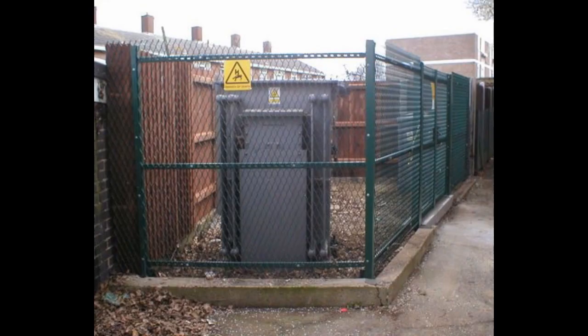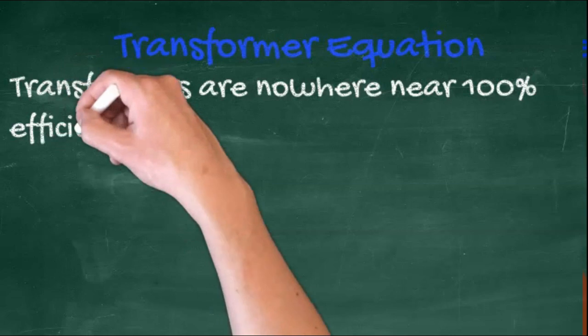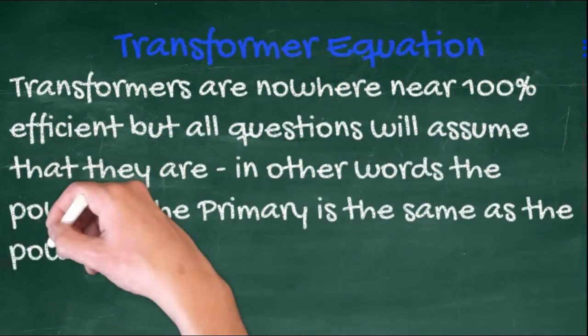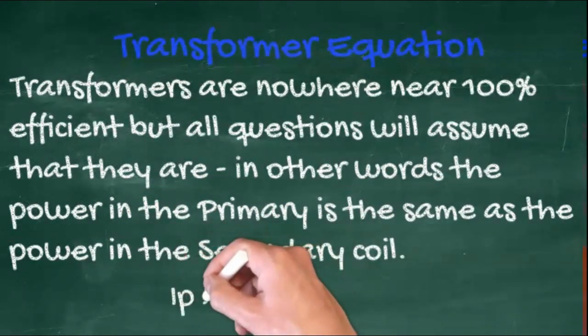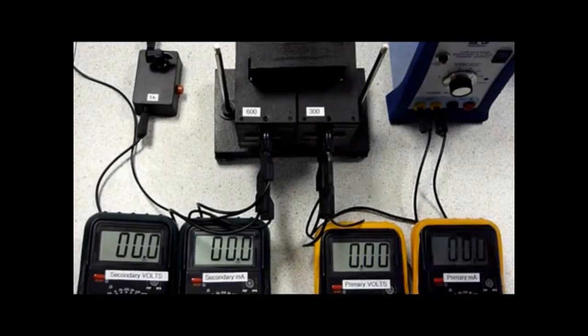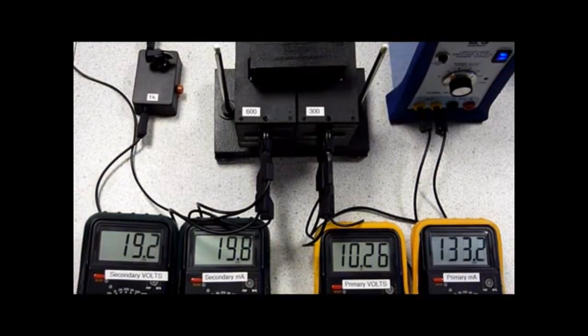This is a transformer in a local substation. Transformers are by no means 100% efficient, but all the questions you'll be asked will assume that they are. Basically, they will assume that the power into the primary will equal the power out at the secondary. Amps times volts in equals amps times volts out. And again, you may well have to rearrange and calculate.